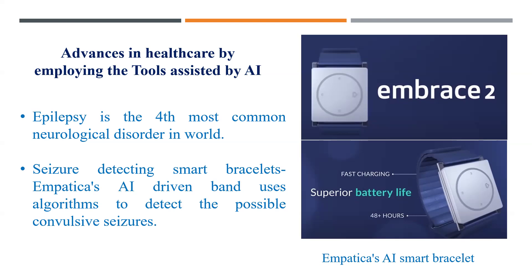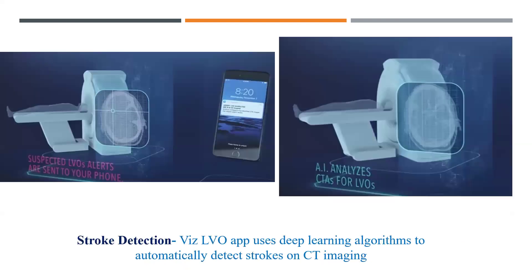Another example is an app that identifies stroke using deep learning algorithms that automatically detect a stroke on CT imaging. As soon as you feed in a CT image, it will immediately tell you whether the patient has had a stroke — even before discussing it with a medical professional, you already know the patient had a stroke.